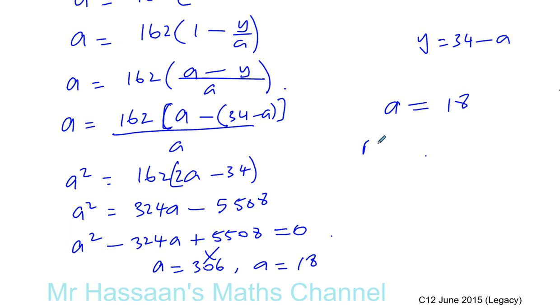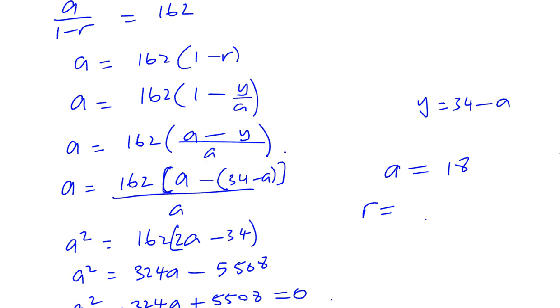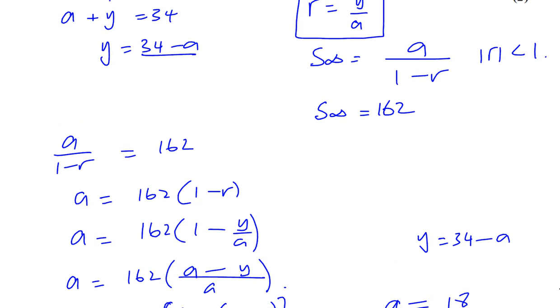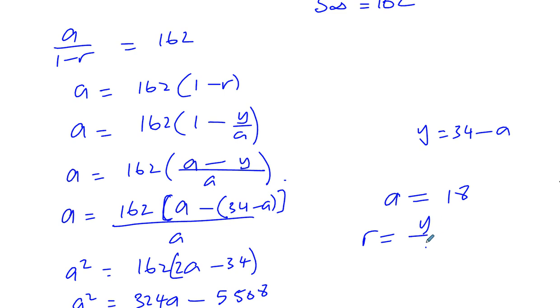Now the common ratio is equal to the second term divided by the first term. So you're going to have the common ratio is y over a. Now we know a is 18 and we know that y is 34 minus 18. So you've got 18, that's 28 and that's 10, 16.